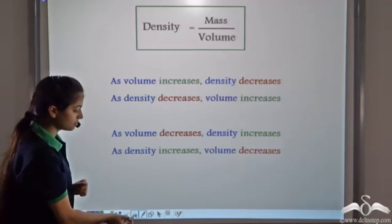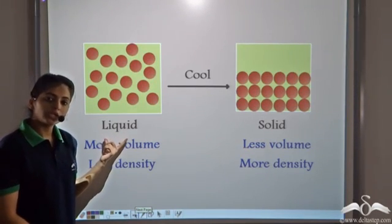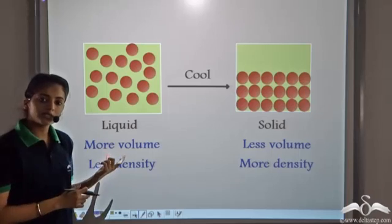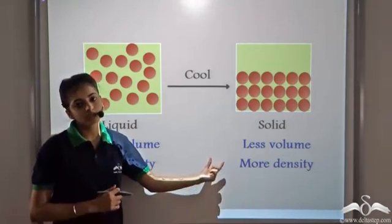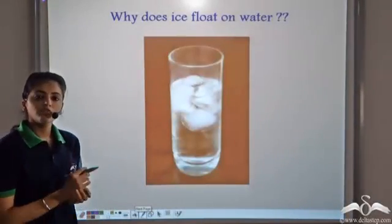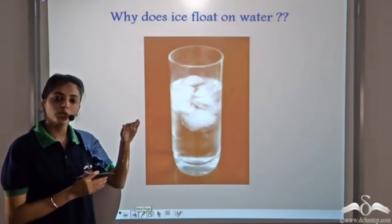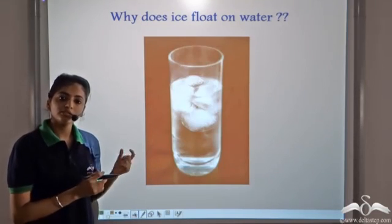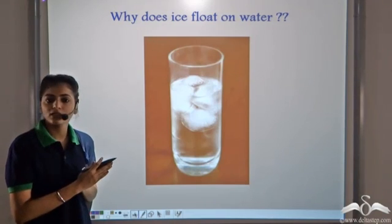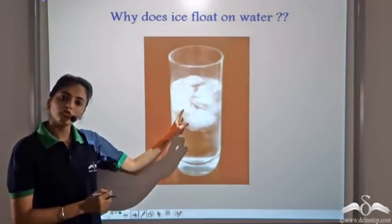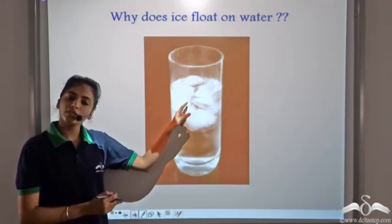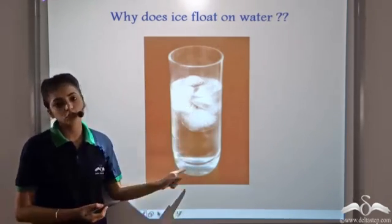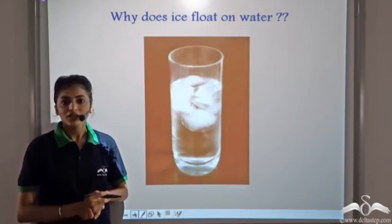So for the same substance, the liquid state has a greater volume, meaning the liquid state has lesser density compared to the solid state. In physics, substances having lower density float on substances having higher density. So for the same substance, the liquid has lesser density than the solid. Ice is the solid form of water, so ice should have greater density than water and therefore should sink. But what we observe is that ice floats on water. So why does ice float on water? Let's try to answer this.